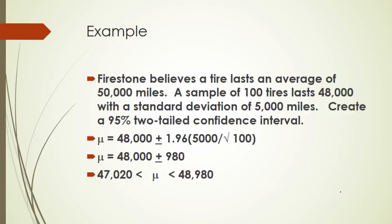Let's do another one. Firestone believes a tire lasts an average of 50,000 miles. A sample of 100 tires lasts 48,000 with a standard deviation of 5,000 miles. Creating 95% two tail confidence interval. 100 is N, goes right there. 48,000 is X bar, it goes right there. Because we have 100, we use 1.96, and standard deviation S is 5,000. Now we do the math and we get 48,000 plus or minus 980. Seems like we've done this math before. And mu is between 47,020 and 48,980.